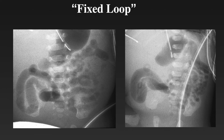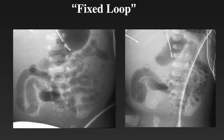This is a baby who is very sick and has a fixed loop of bowel — meaning a dilated focal loop of bowel that is unchanging over several hours to days. This represents a focal ileus and is often seen with ischemic bowel in babies with necrotizing enterocolitis.